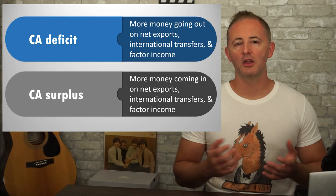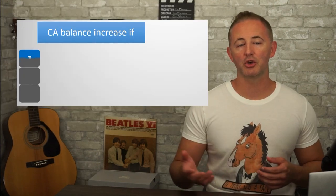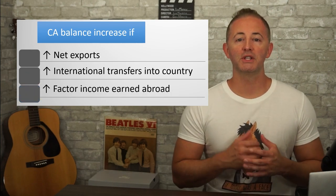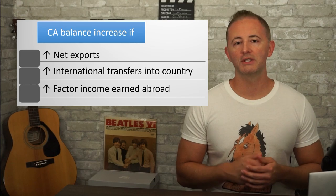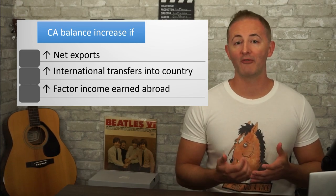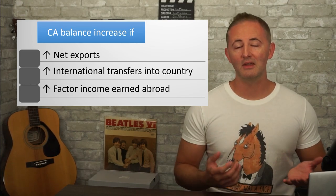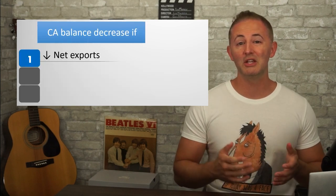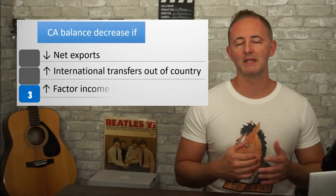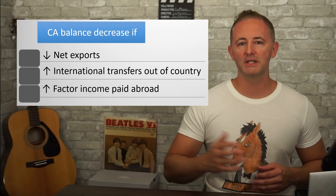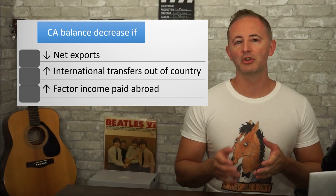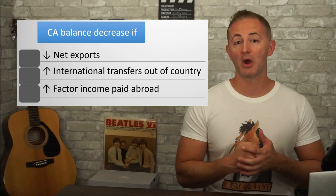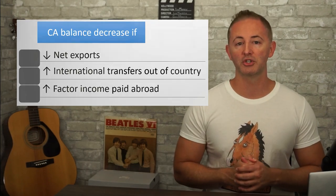A country's current account balance will increase as a result of an increase in net exports, an increase in international transfers coming into the country, or an increase in rent, wages, interest, or profits earned abroad. On the other hand, a country's current account balance will decrease if there's a decrease in net exports, an increase in international transfers going out of the country, or an increase in rent, wages, interest, or profits paid to people in other countries.